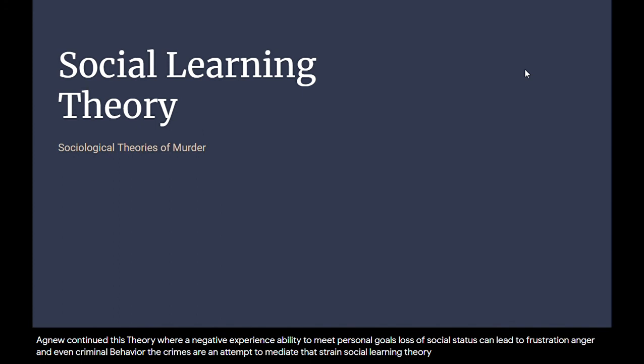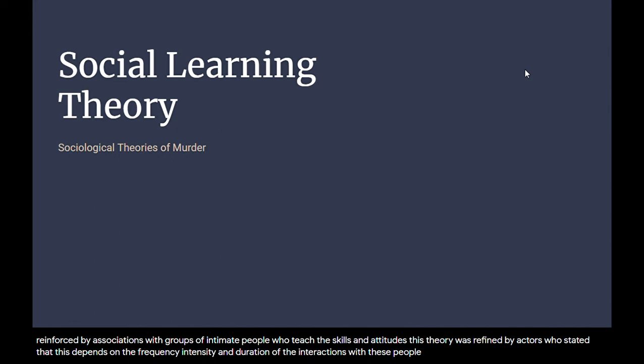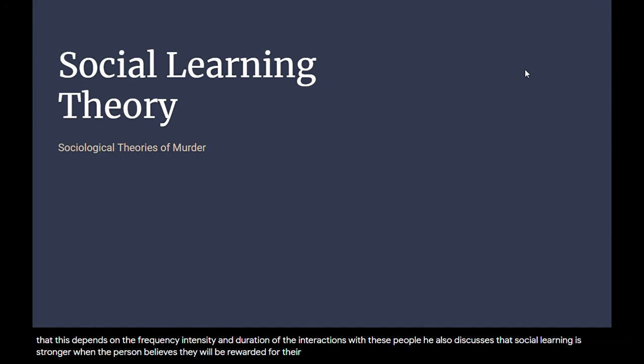Social learning theory argues that the idea of killing comes from what one learns and sees as they interact with the people around them. Sutherland and Cressy, in 1984, stated that criminal behavior is reinforced by associations with groups of intimate people who teach the skills and attitudes. This theory was refined by Akers, who stated that this depends on the frequency, intensity, and duration of the interactions with these people. He also discusses that social learning is stronger when the person believes they will be rewarded for their crimes rather than caught or punished. Additionally, he states that learning doesn't have to be in person — media can also be attributed to social learning.